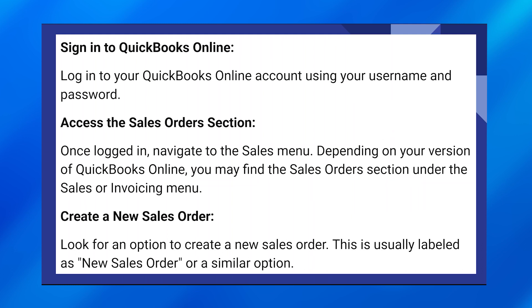Depending on your version of QuickBooks Online, you may find the sales order section under the sales or invoicing menu. Look for an option to create a new sales order. This is usually labeled as a new sales order or a similar option.